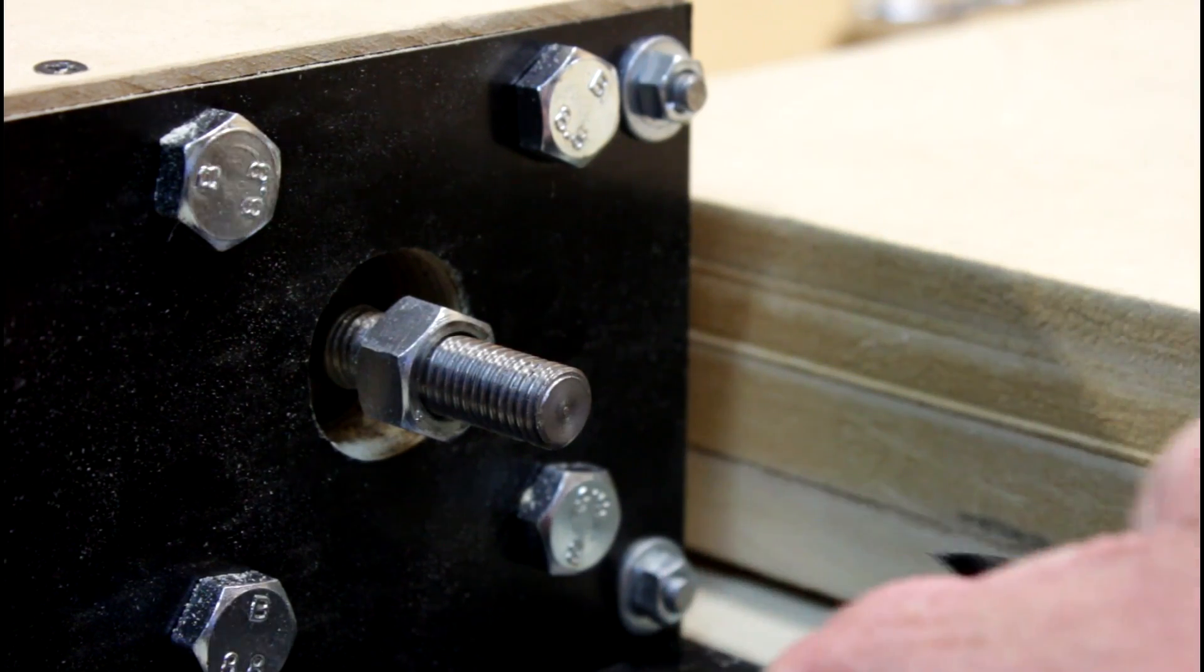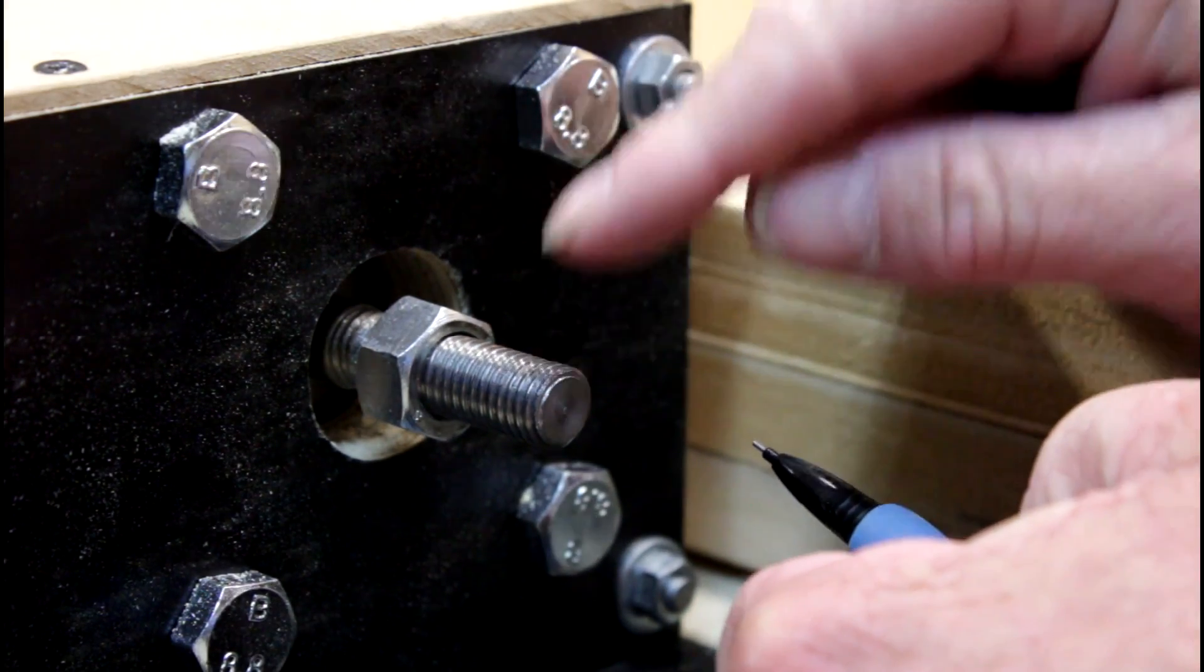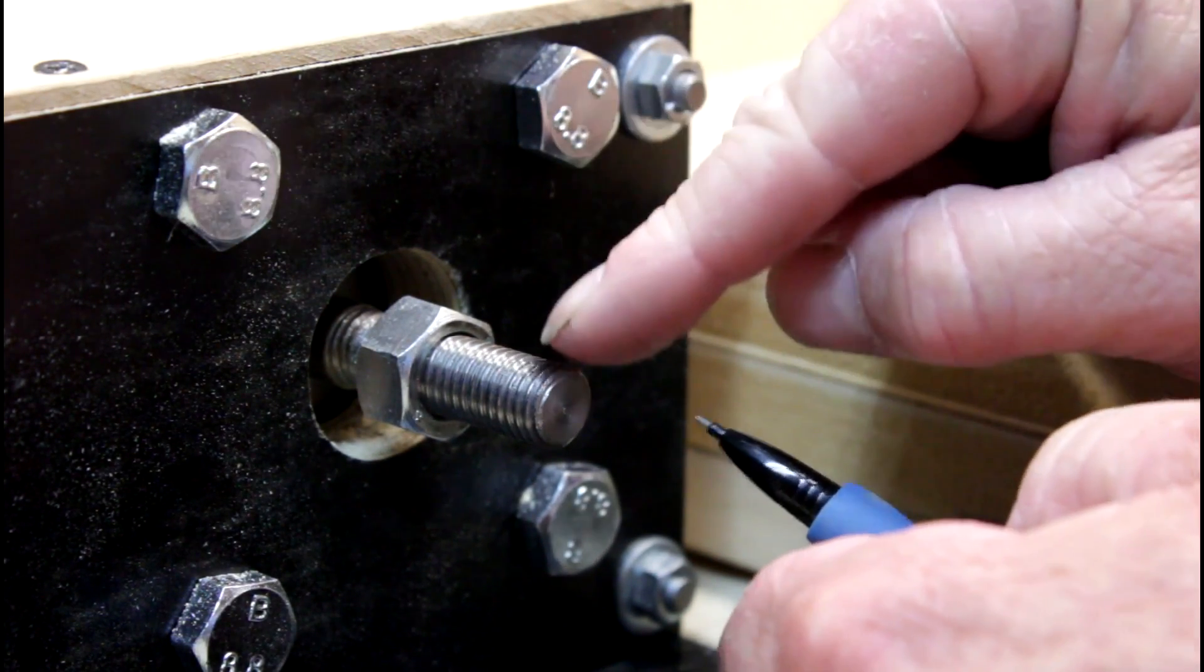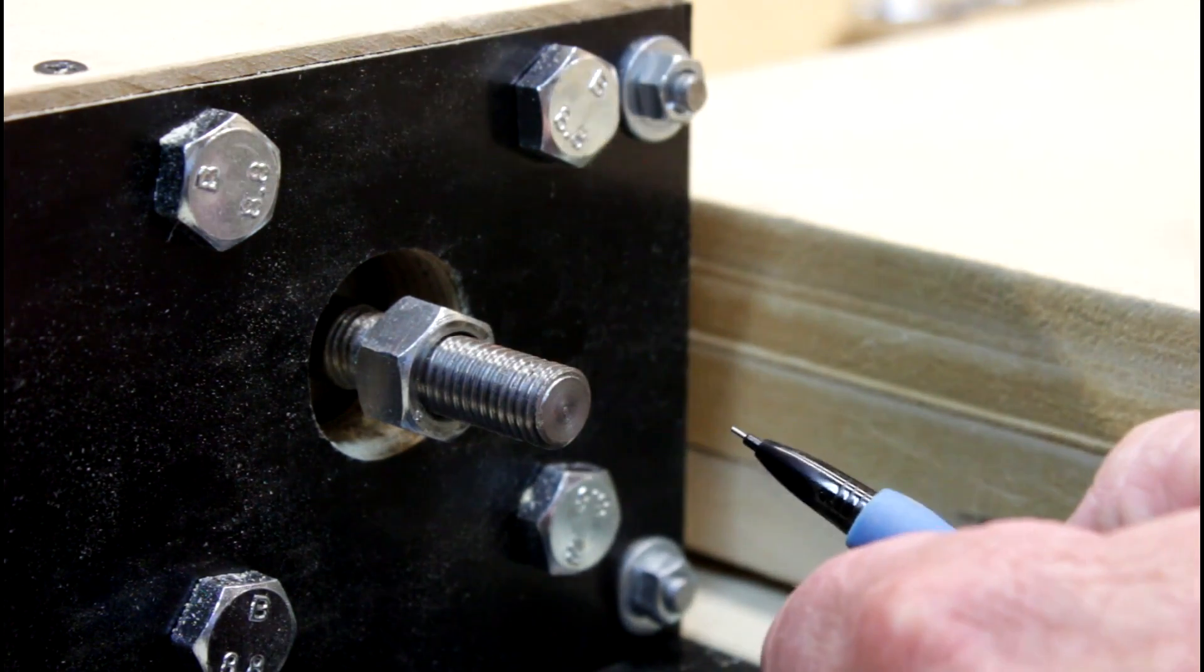Next thing we need to do is we need to align the center of our tailstock with the center of our shaft here. And the first thing we need to do is find out where the center is. And there's an easy way of doing that.